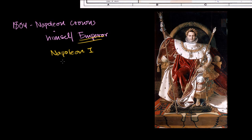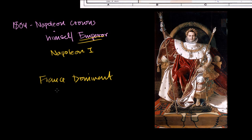We end the Third Coalition with France dominant in Europe, having gained all this territory mainly from Austria. The Holy Roman Empire no longer exists — it's now the Confederation of the Rhine. Napoleon, after Austerlitz, thinks he is invincible. He is now Emperor, and all his visions of grandeur are coming true.